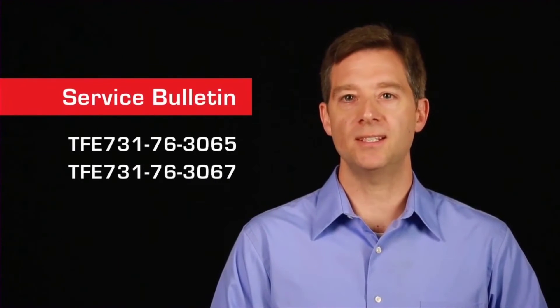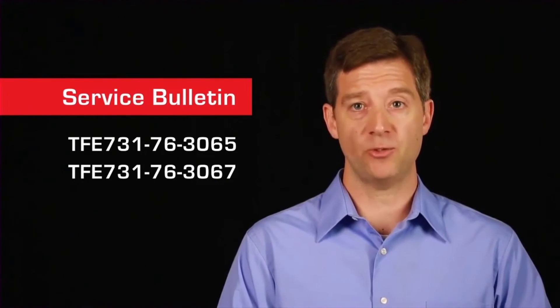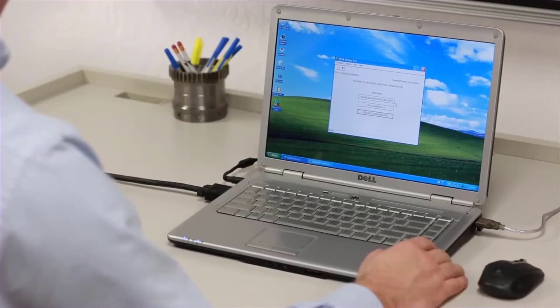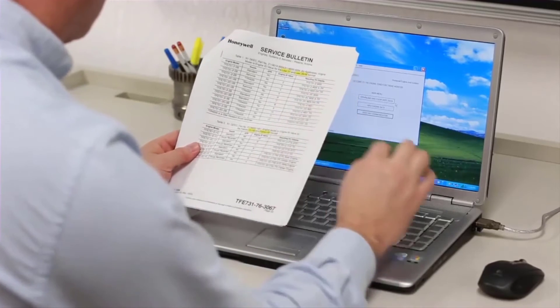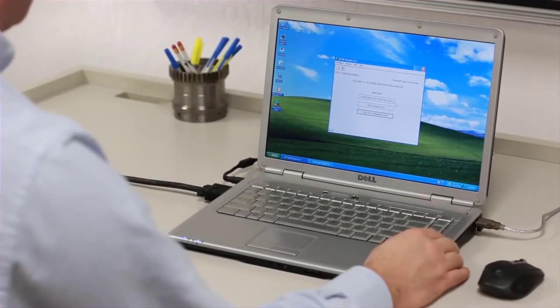First, enter the initialization information, then perform an initial download. Refer to Service Bulletin 76-3065 for-4 and-5 engines, or 76-3067 for-2 and-3 engines. The Service Bulletin contains a worksheet that should be filled out. This worksheet will be used to input the required information for DEEC initialization.